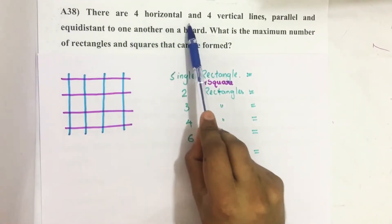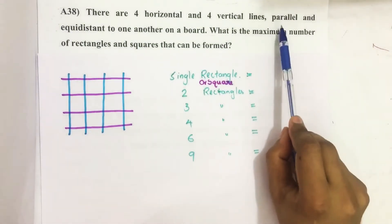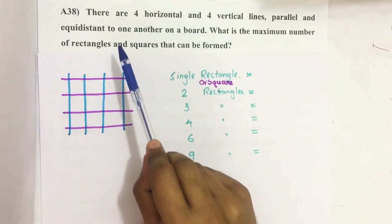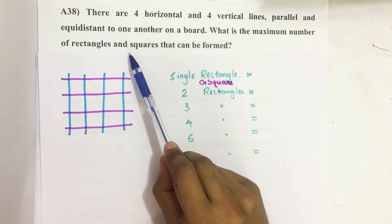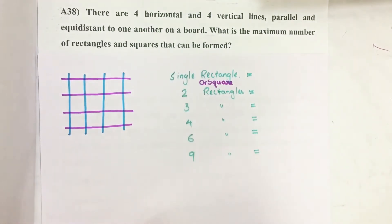There are four horizontal and four vertical lines parallel and equidistant to one another on a board. What is the maximum number of rectangles and squares that can be formed?